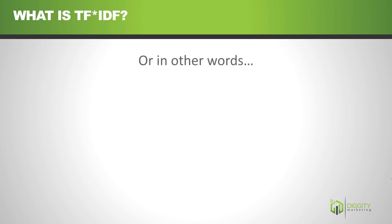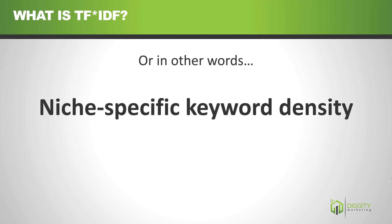But a better way of thinking of this is niche-specific keyword density. Let's say I want to rank for the words 'best wireless routers.' What better way to figure out what I need to talk about and how often than to use a piece of software to tell me exactly what the other sites on page one are putting in their content and how often.